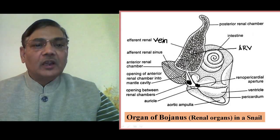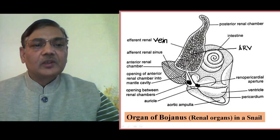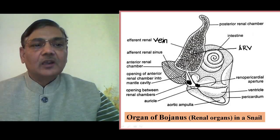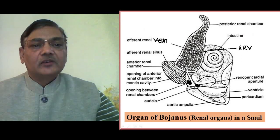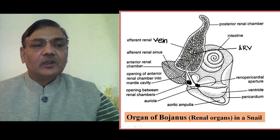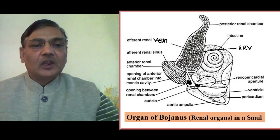In the anterior renal chamber, on the upper side, there are many striations situated on either side of a sinus. A sinus is a blood space where a larger amount of blood can be retained. This is the afferent renal sinus, and on either side of it, striations are shown. These striations are actually in the form of lamellae, or leaf-like structures, which hang downward.